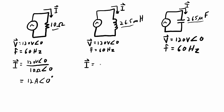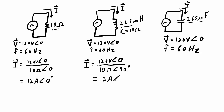For the inductor example, current is again voltage divided by impedance. The inductor is 26.5 millihenrys, so I calculate its reactance: XL = 2πfL = 2 × π × 60 Hz × 26.5 mH = 10 ohms. The magnitude of the impedance is 10 ohms with a phase angle of 90 degrees. This gives a current of 12 amps with a phase angle of minus 90 degrees, indicating the current lags behind the voltage by 90 degrees.